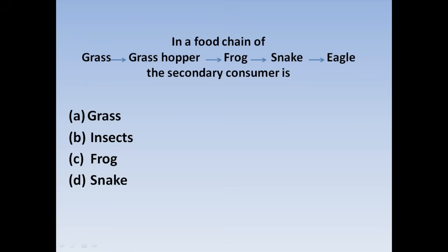Next question: In the food chain — Grass, Grasshopper, Frog, Snake, Eagle — the secondary consumer is: Option A: Grass, Option B: Insect, Option C: Frog, Option D: Snake. Grass is the producer, Grasshopper is the primary consumer, so the secondary consumer is Frog. Correct answer: Option C, Frog.